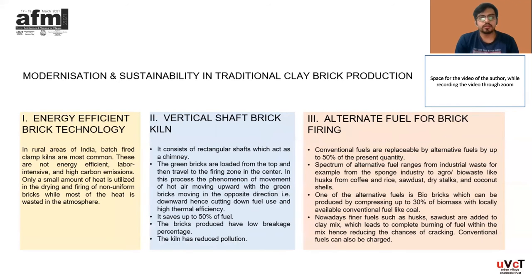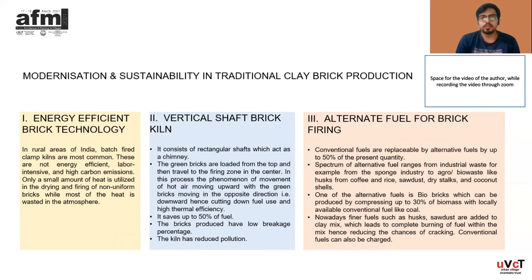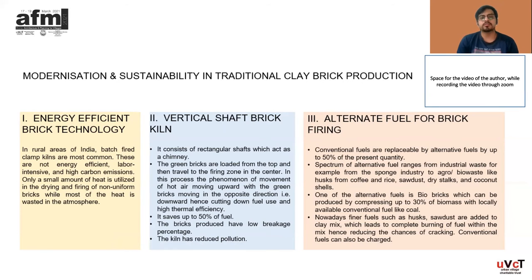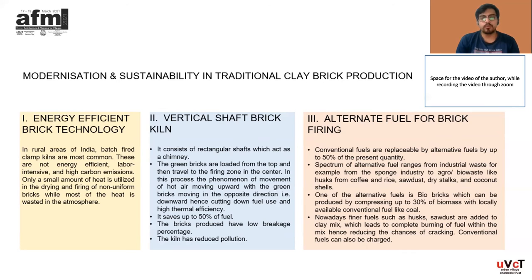The second is the Vertical Shaft Brick Kiln. It consists of a rectangular shaft which acts as a chimney. The green bricks are loaded at the top and travel to the firing zone in the center. In this process, hot air moves upward while the green bricks move in the opposite direction, downward, cutting down fuel use through high thermal efficiency. It saves up to 50% of fuel compared to a normal brick kiln. The bricks produced have a low breakage percentage and the kiln has obviously reduced pollution.